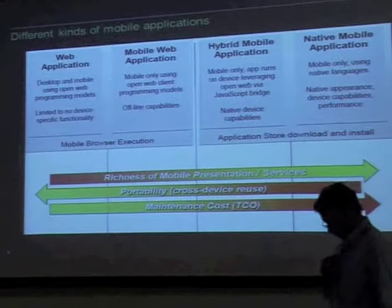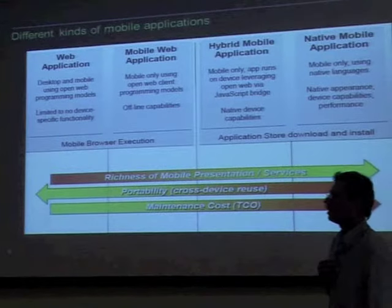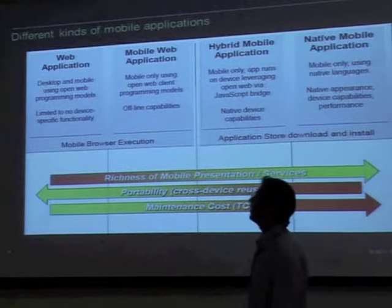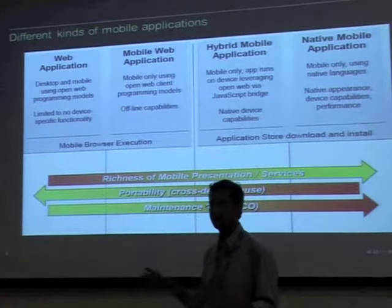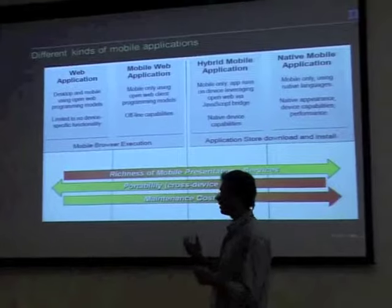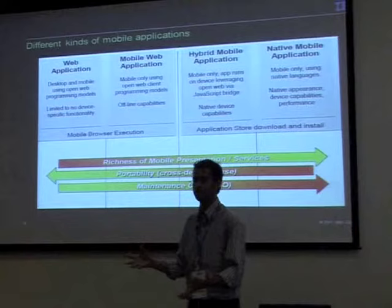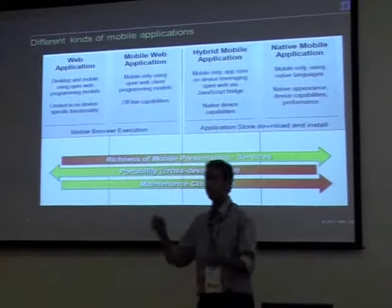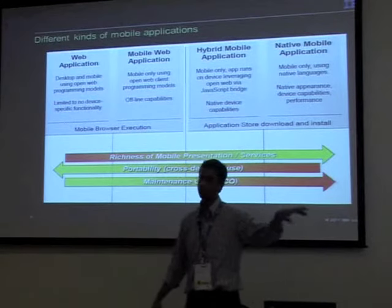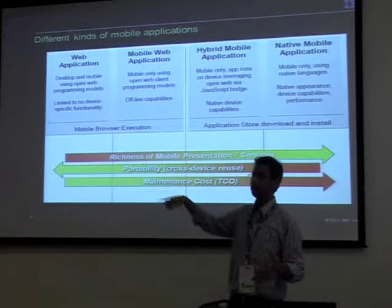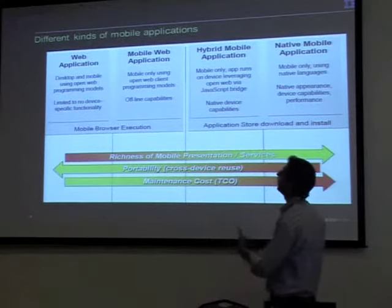To give a bit of background on the different kinds of mobile applications: there are the usual web applications that have always been there — desktop web applications that don't really have any mobile-specific content. You can access them on mobile browsers, but they are not guaranteed to work well with mobile. For example, if you launch Facebook from a mobile browser, you have to scroll left to go to photos and scroll right to get to the logout page.